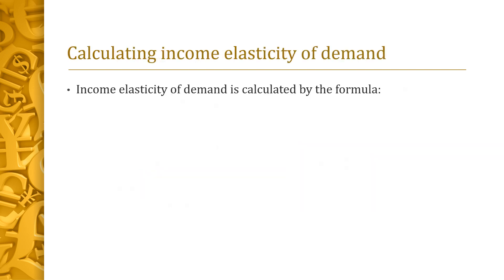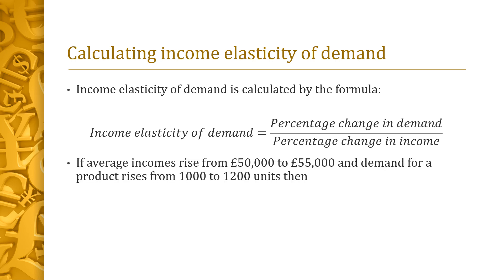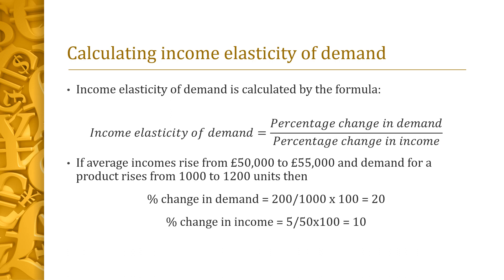The formula to calculate income elasticity of demand is percentage change in demand over the percentage change in income. If average incomes rise from £50,000 to £55,000 and demand for a product rises from 1,000 units to 1,200 units, then the percentage change in demand is 20%, the percentage change in income is 10%, and so the income elasticity of demand for that product is 2.